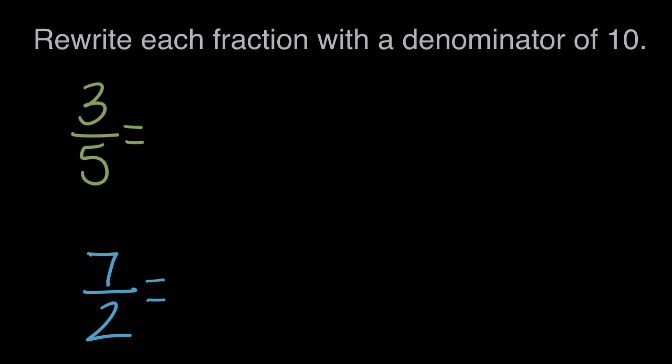So let's start with 3 fifths, and we can look at this visually. Here we can use this rectangle to represent a whole, one whole, and to show 3 fifths of that whole, we're going to need to divide it into fifths, or five equal pieces. So let's do that.